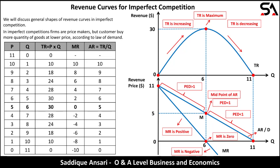For imperfect competition, we will discuss the general shapes of revenue curves. Imperfect competition can be further divided into three types: monopoly, oligopoly, and monopolistic competition. However, we will not go into specific shapes for each of the three categories here — we are discussing general shapes only. In imperfect competition, firms are price makers.